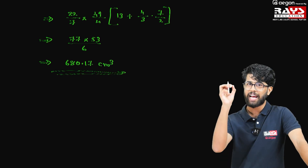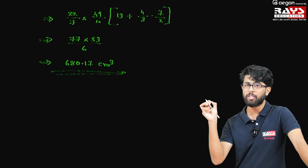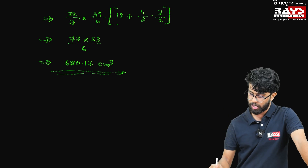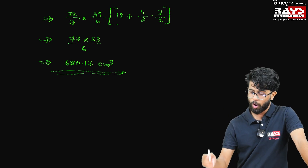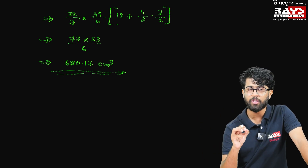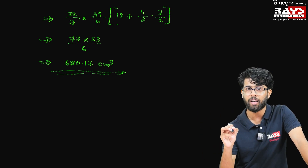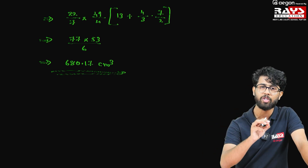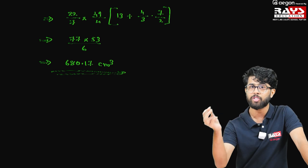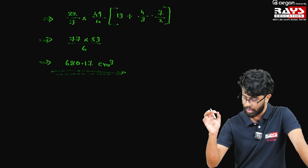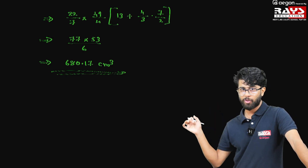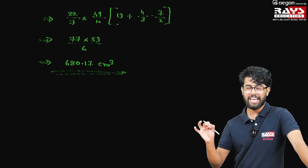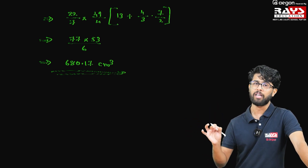Always write the unit in cubic format. The volume's unit will always be in cubic format and the area's unit will always be in square format. So the final answer is 680.17 cm³.